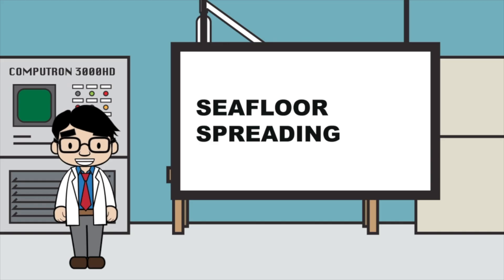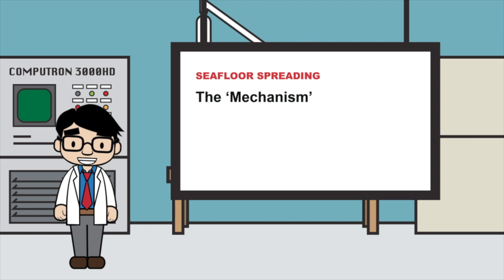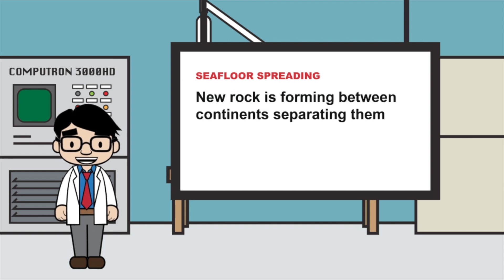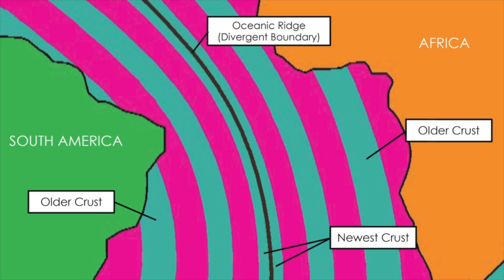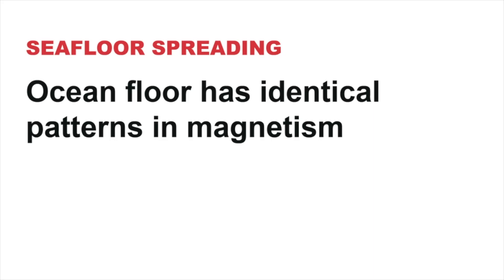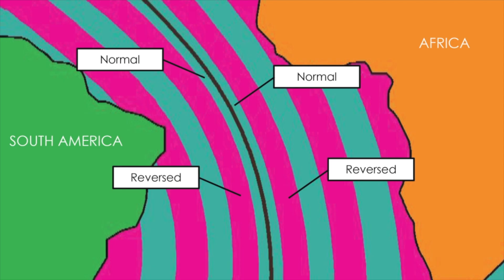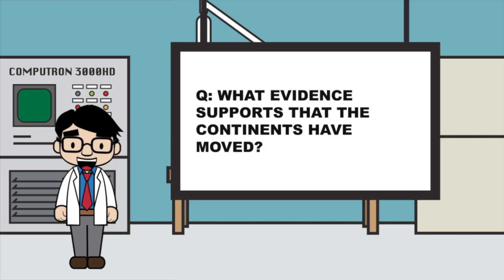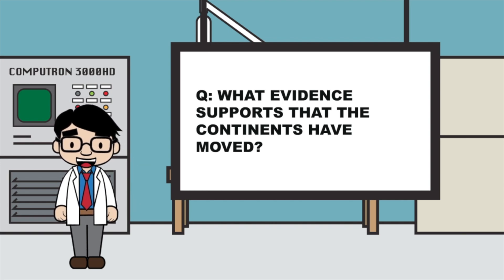Lastly, let's look at seafloor spreading, which is the mechanism that creates new rock between the continents as they separate. That means the ocean floor has the newest rock at the ridge. Additionally, the ocean floor has identical patterns in magnetism caused by the reversing of the North and South Pole, which happens periodically in our Earth's history. Now you should be able to answer the question: what evidence supports that the continents have moved?